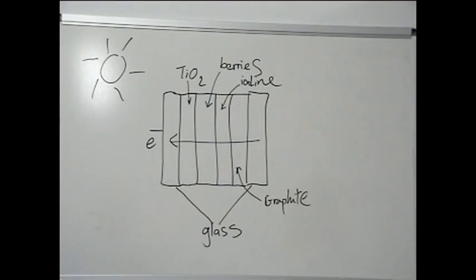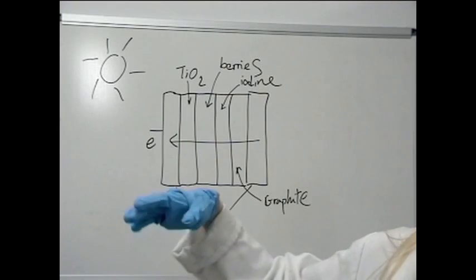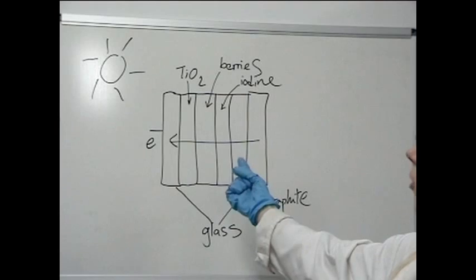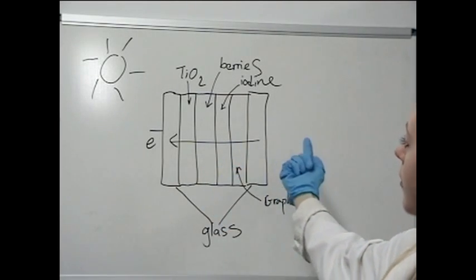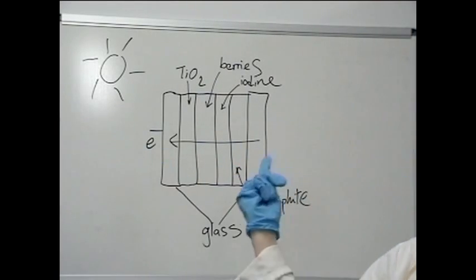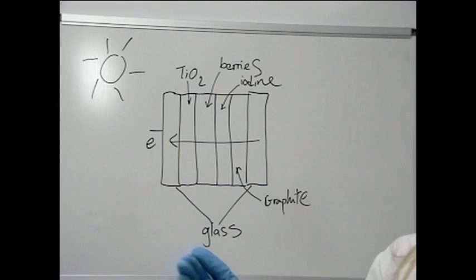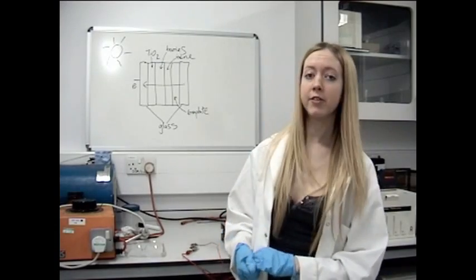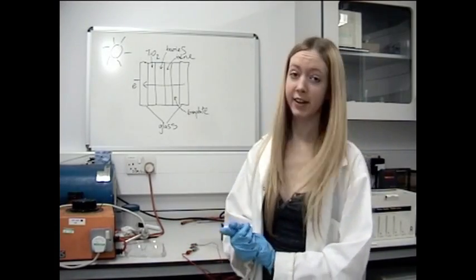So going back to our original diagram, we've now created this entire solar cell. We've got the berries absorbing the sunlight, and we've got this flow of electrons across from between the two glass slides, and that's what we've just been looking at. Hopefully, you've seen that we can actually make solar cells out of very cheap materials, such as berries and titanium dioxide.